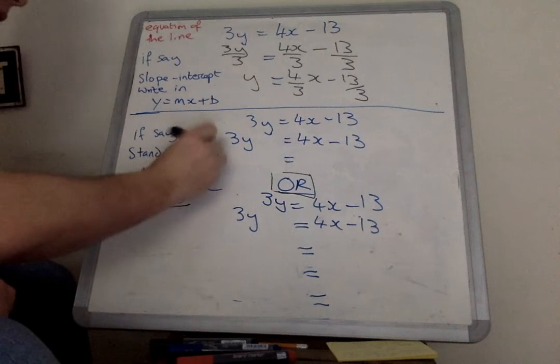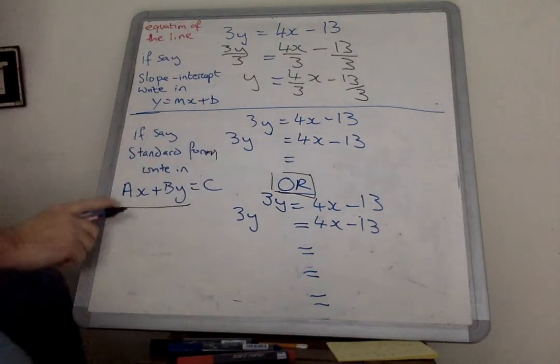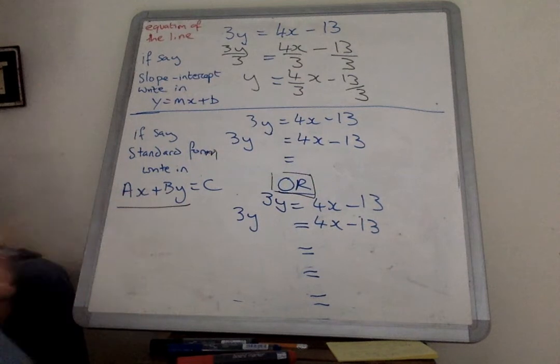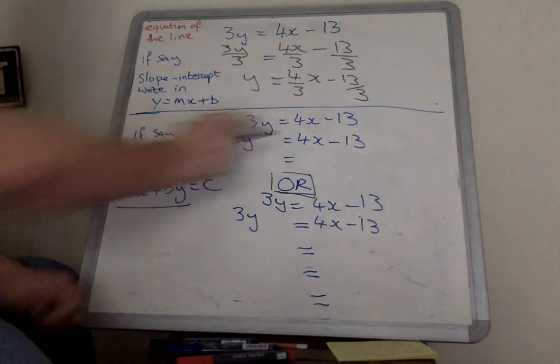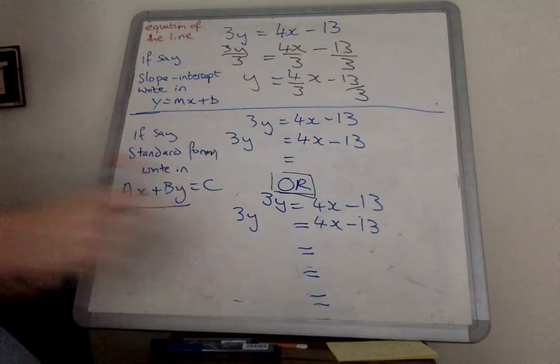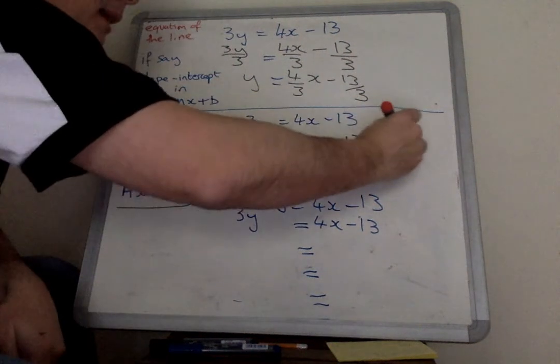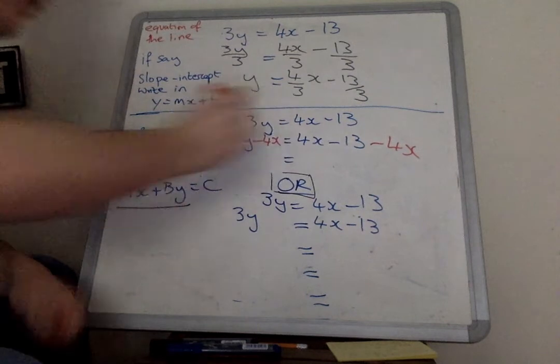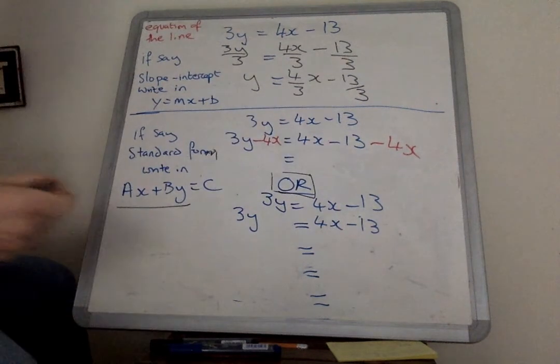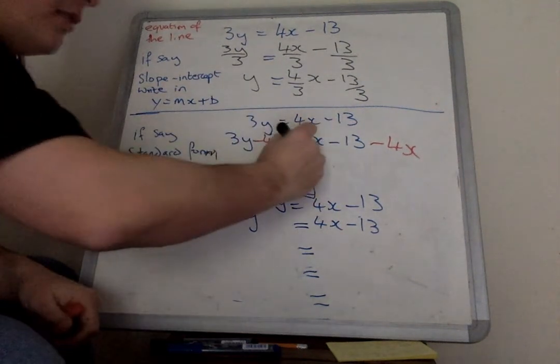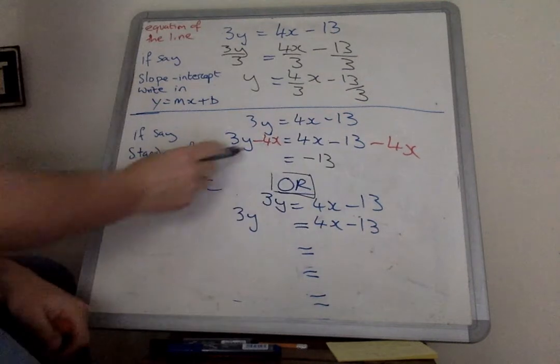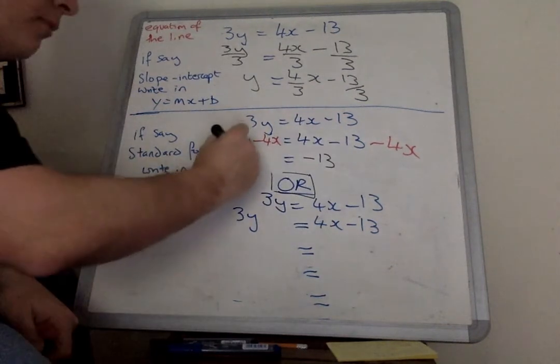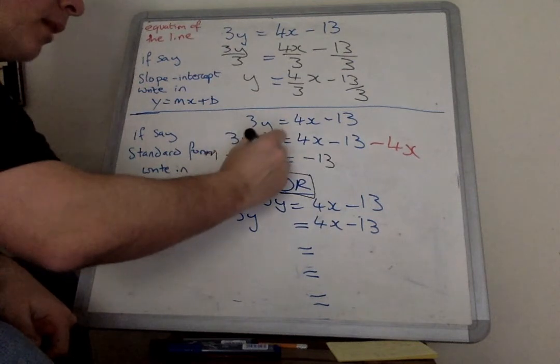Sometimes, annoyingly, they will ask you to leave it in standard form, which looks like this: Ax plus By equals C, with the x and y on the same side. And if you notice, the x and y are not on the same side here. But I can make that happen by making the 4x disappear here by subtracting 4x, but then I have to do it at the other side. This then leaves me just with minus 13. And I don't really want the x there. I like it at the front, so I'm going to put that in front and the plus 3y behind.